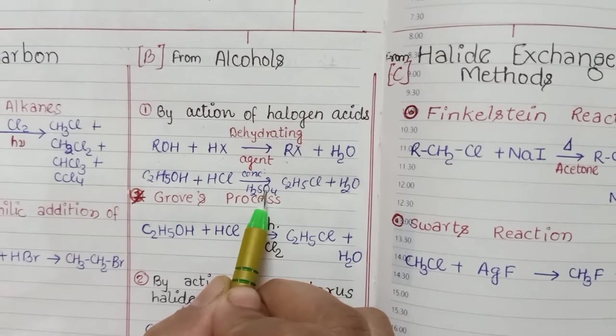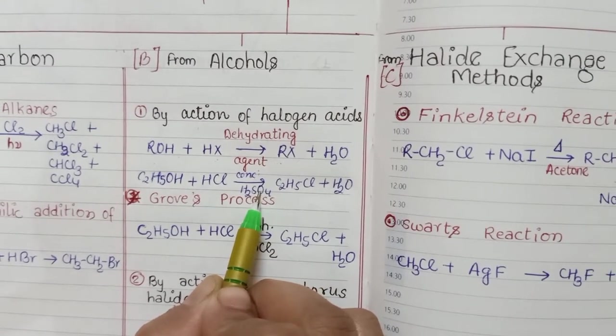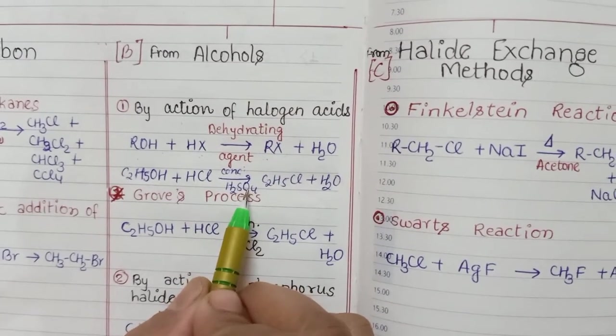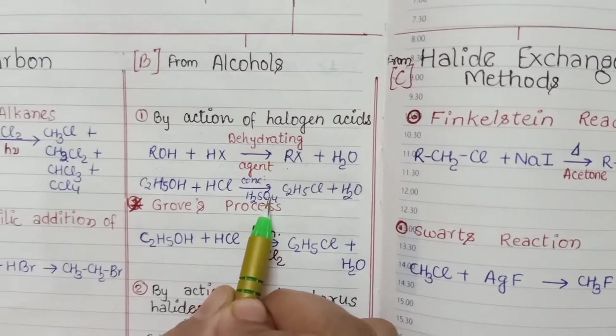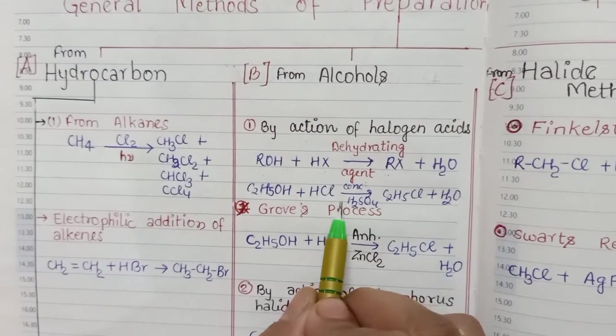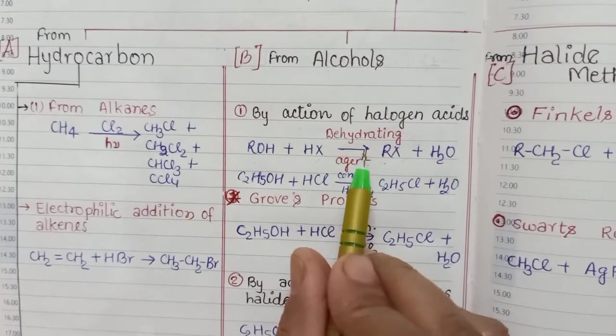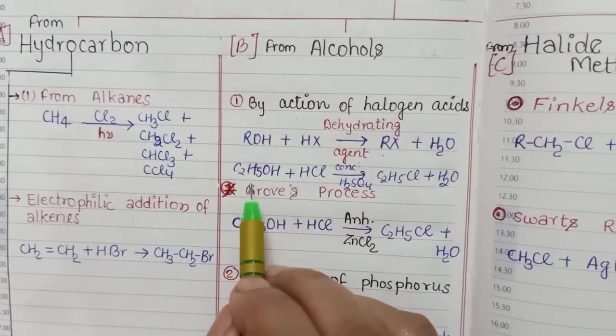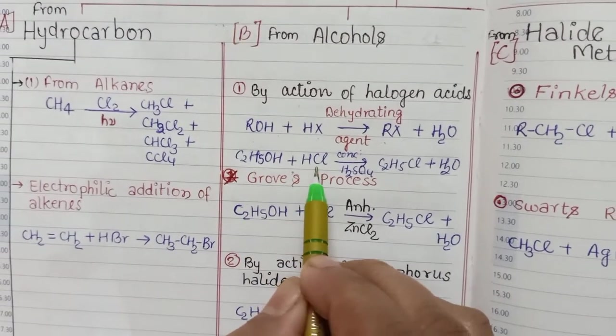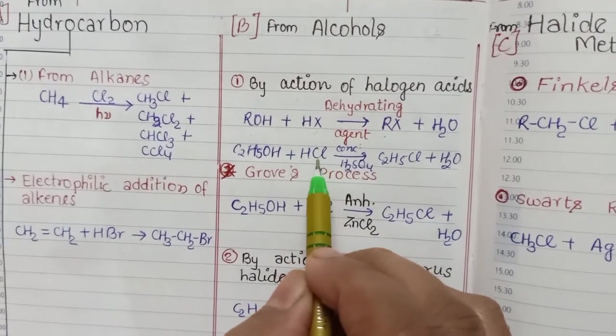Dehydrating agent - those substances which are used to absorb water from other substances are called dehydrating agents. Here, concentrated H2SO4 acts as a dehydrating agent when ethyl alcohol reacts with HCl, this halogen acid, to form haloalkane ethyl chloride.